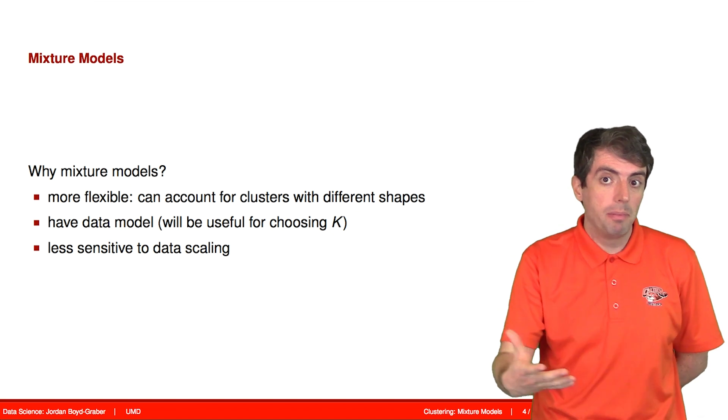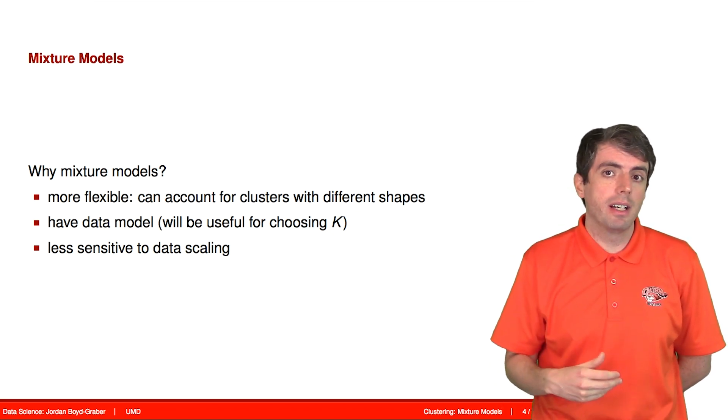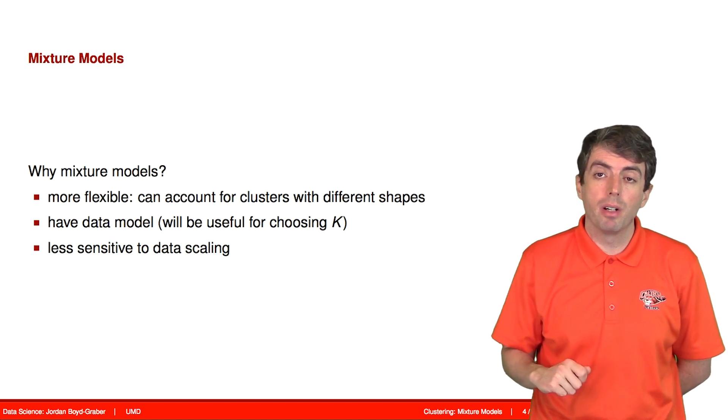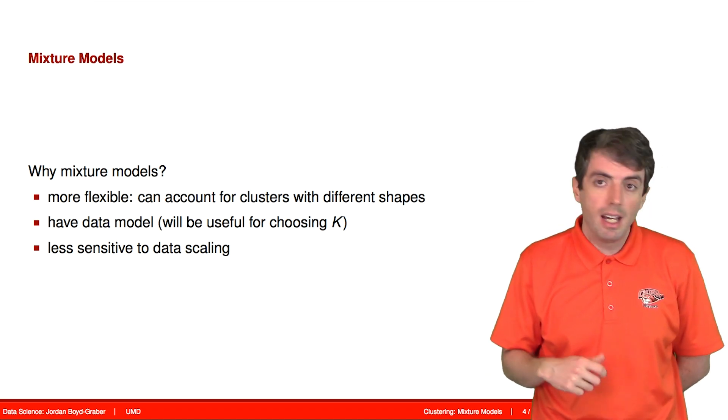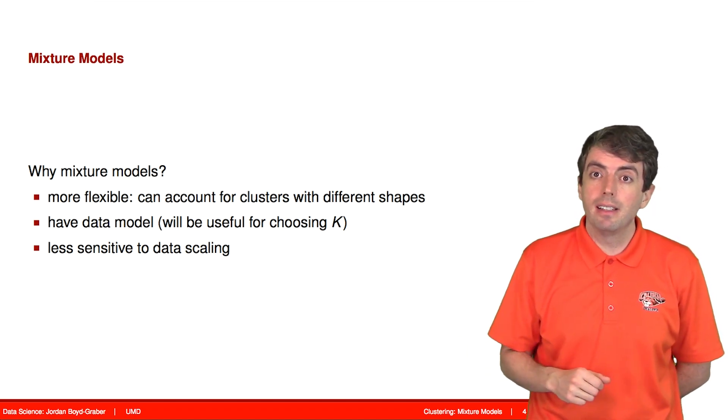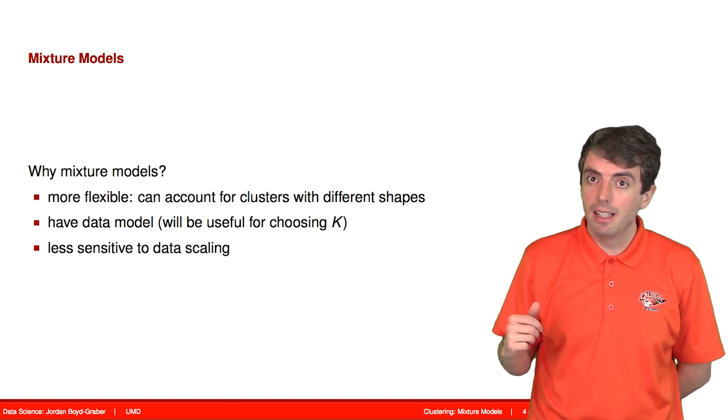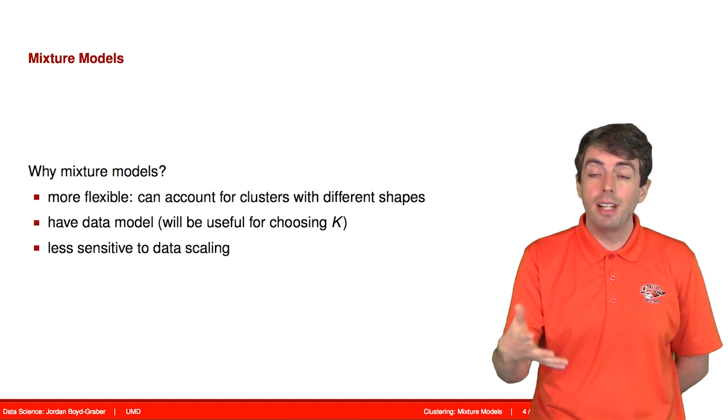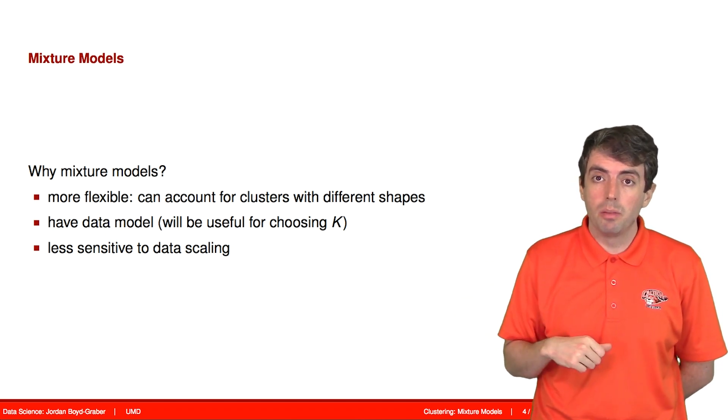You can ask, what is the probability of my data under a clustering? And you can try out that for different values of k to select the number of clusters that you're actually going to see. And as a result, this makes it less sensitive to data scaling. If you double all of your coordinates by two, your cluster shouldn't change that much. This makes it a little more robust to that.